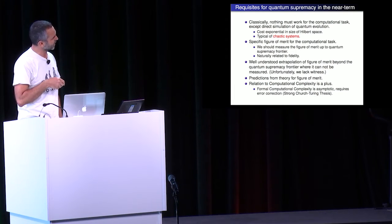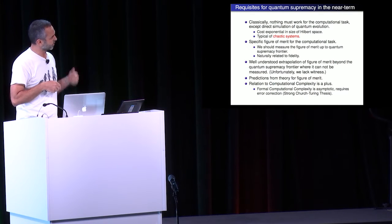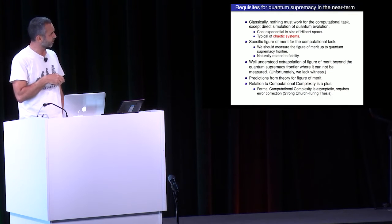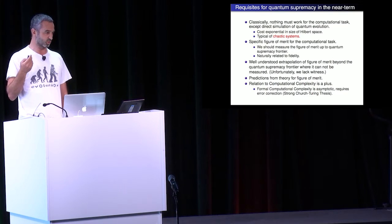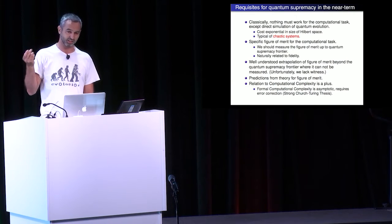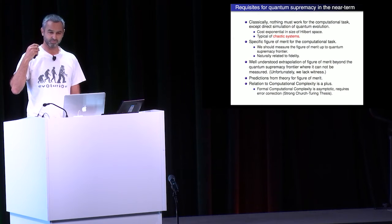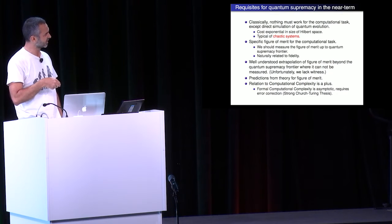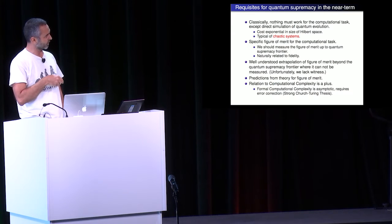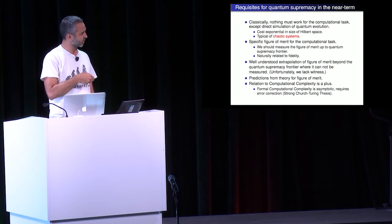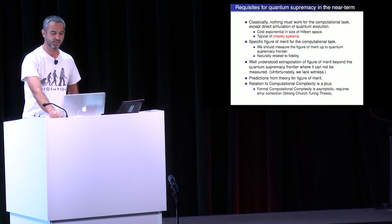Because we cannot directly measure the figure of merit beyond the supremacy frontier, we need to understand well how to extrapolate it. It's very helpful to have predictions from theory for what this figure of merit will be beyond the supremacy frontier — and that again is related to fidelity. One thing that we like is if there is a relation to computational complexity, because computational complexity at least asymptotically gives you very strong arguments that there are no efficient algorithms for these tasks. That's the case for random circuits, and that's a new result. But to really satisfy the more formal requirements of computational complexity — to really violate the extended Church-Turing thesis — that will require error correction. So we're not going to formally satisfy the requirements of computational complexity, but results in computational complexity give us more confidence that there are no efficient algorithms for the tasks we're trying to do.